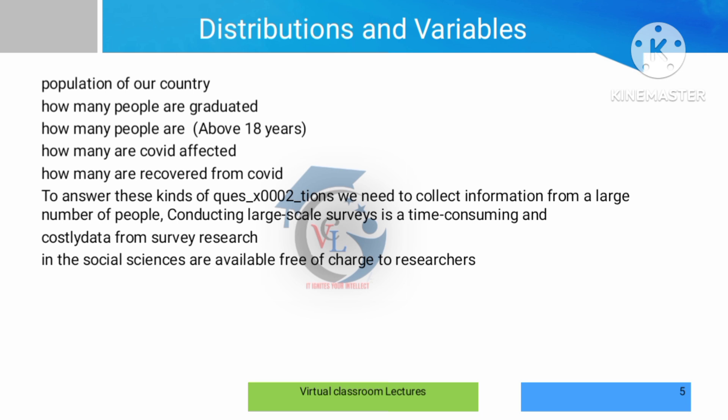If there are multiple variables, the number of variables determines the decisions and conclusions. For example, if you look at a population through a survey, you can categorize and collect the population data. The number of variables involved guides the type of analysis to apply.